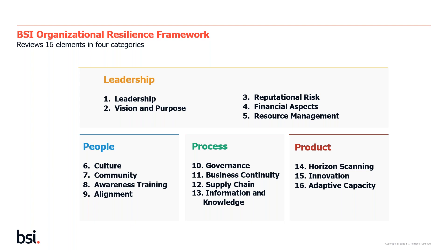The final category, product, includes horizon scanning — looking at what's coming over the horizon that needs to be addressed, whether you go around it, through it, or just be aware of it. Horizon scanning signals to consumers what it is you're actually producing or providing. The final two elements are innovation and adaptive capacity. Think of innovation as small steps — continual improvement is really important to organisational resilience. Adaptive capacity is the ability to flex resources, to stretch and morph depending on what's required through the context, either internally or externally.